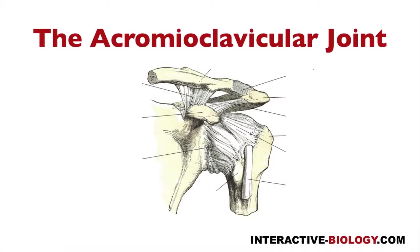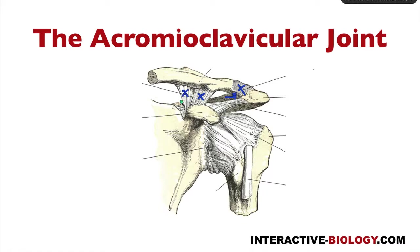With the acromioclavicular joint, we have the superior acromioclavicular ligament and inferior acromioclavicular ligament. Then we have the trapezoid ligament and the coracoclavicular ligament.